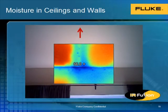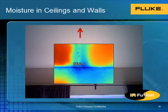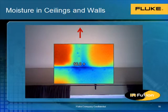Here is another example of moisture in ceilings. The source of the leak is actually up above where the red arrow is pointing. Because this is a vaulted ceiling, the leak is far up above and the moisture and water is actually running down the slope and pooling once it meets the wall. The Fluke IR Fusion is very helpful here because it helps pinpoint where along this wall the moisture is pooling. Without that visual reference image, it would be very hard to tell where that's actually happening.